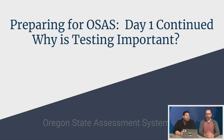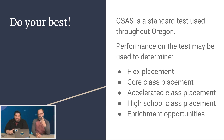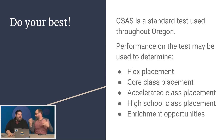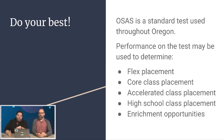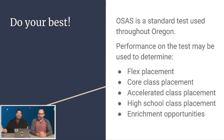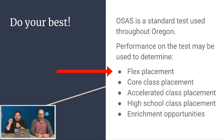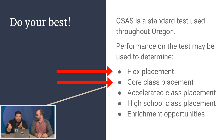Why is testing important? This is what kids don't know. It's used throughout Oregon to compare how we're doing to the rest of Oregon. Our school gets graded on this — our student body gets a school report card that tells you how well you're doing. And within the school, we use this to determine your flex classes and your core class placements. We use this test to determine accelerated class placement — so if you're moving a little faster than everybody, we use this test for that.